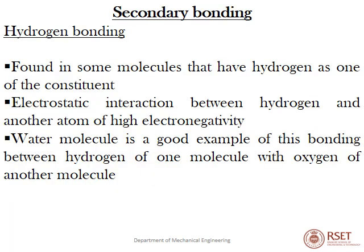Another type of secondary bonding is hydrogen bonding, found in molecules that have hydrogen as one of the constituents. It involves electrostatic interaction between hydrogen and another atom of high electronegativity. Water (H₂O) is a good example — hydrogen bonding occurs between the hydrogen of one molecule and the oxygen of another molecule.